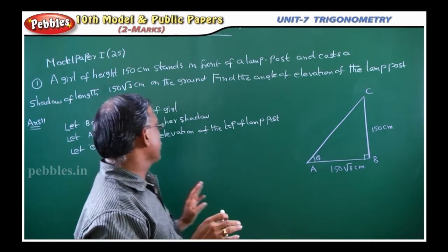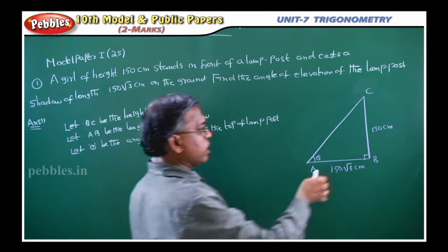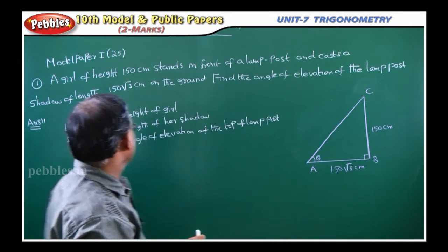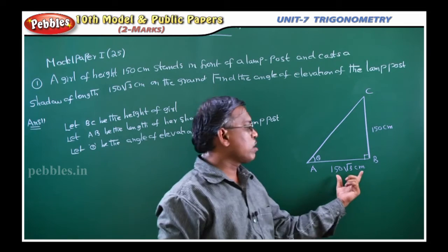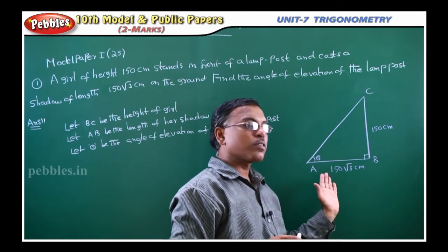Now, very easy problem here. See, let BC be the height of the girl. So in the diagram, this part represents the height of the girl BC. Next, let AB be the length of her shadow. That means this part. So the girl's shadow is falling like this.